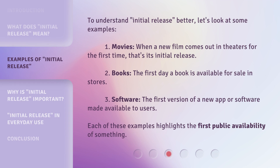To understand Initial Release better, let's look at some examples. 1. Movies: when a new film comes out in theaters for the first time, that's its initial release. 2. Books: the first day a book is available for sale in stores. 3. Software: the first version of a new app or software made available to users. Each of these examples highlights the first public availability of something.